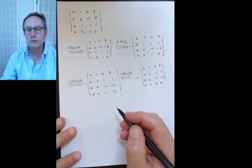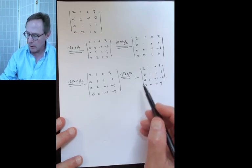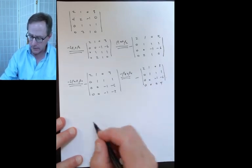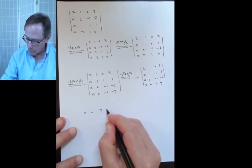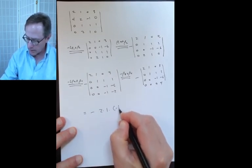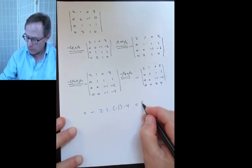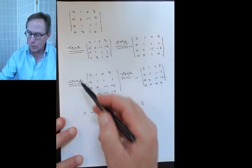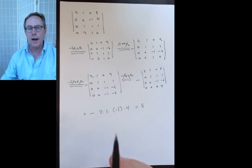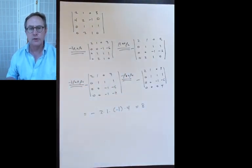Now I have an echelon form matrix, so I just multiply down the diagonal, not forgetting the minus sign: minus 2 times 1 times −1 times 4 equals 8. The lesson is you don't use the permutation expansion in practice. If somebody throws an arbitrary matrix at you and asks for the determinant, you use Gauss's method.